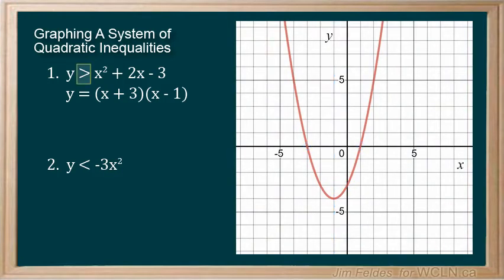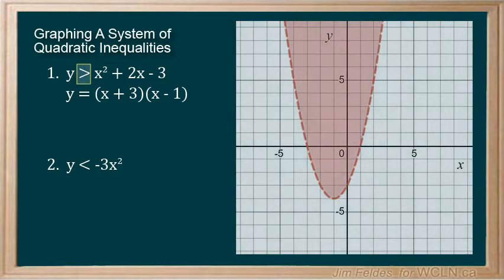Our inequality is just greater than, so we use the dashed line and shade above.